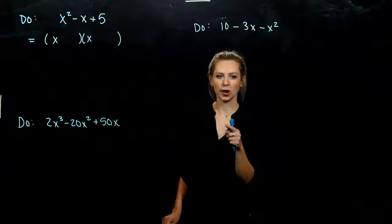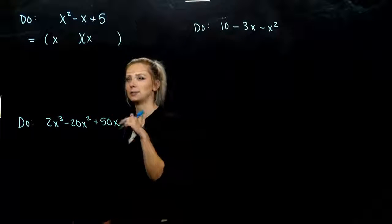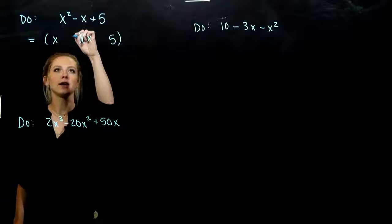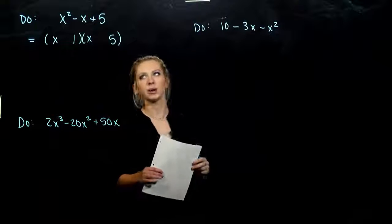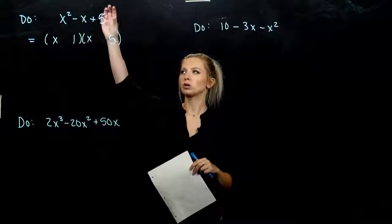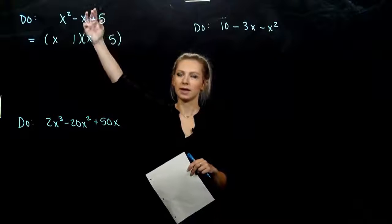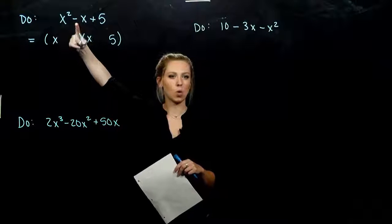And 5 is prime, so our only options for this guy are 5 and 1. But we need to find what combination, positive and negative, will multiply to give us positive 5, add to give us negative 1.